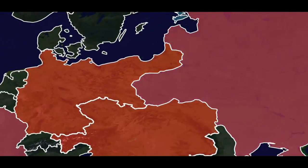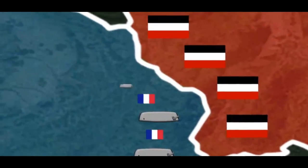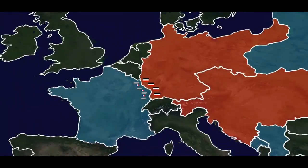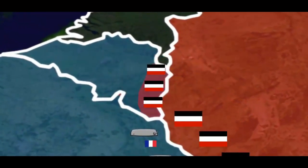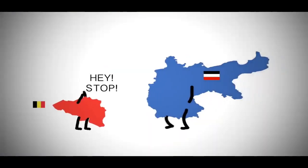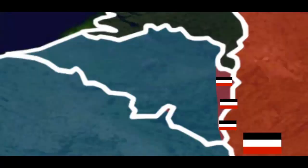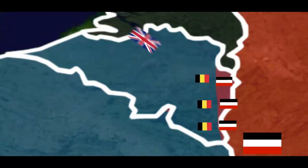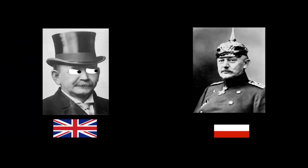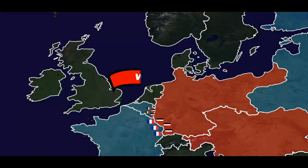There was just one problem: France had heavy fortifications along the German border that Germany couldn't afford to fight through. So Germany decided to go around them through Belgium. Belgium was neutral, but Germany wanted to march 750,000 troops through it. Belgium fought back and slowed the Germans down. Britain, furious that Germany was invading a neutral country, then declared war on Germany.